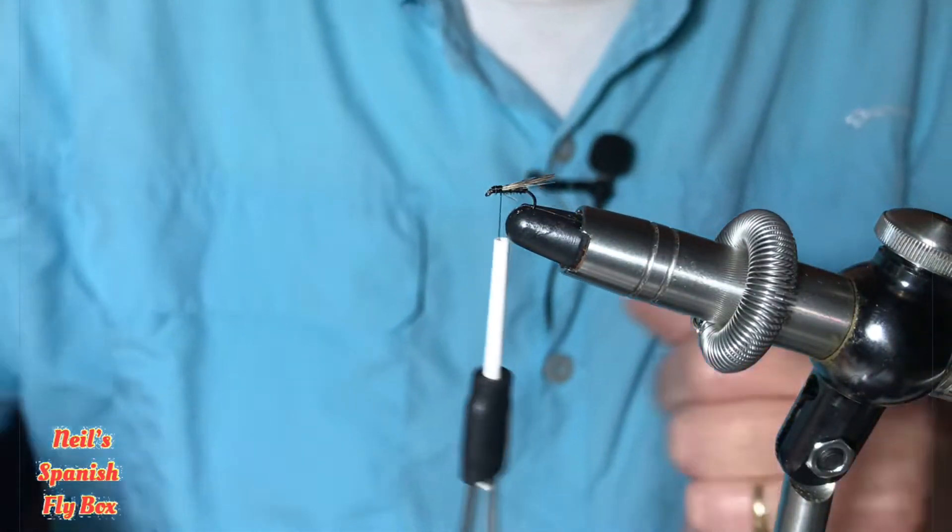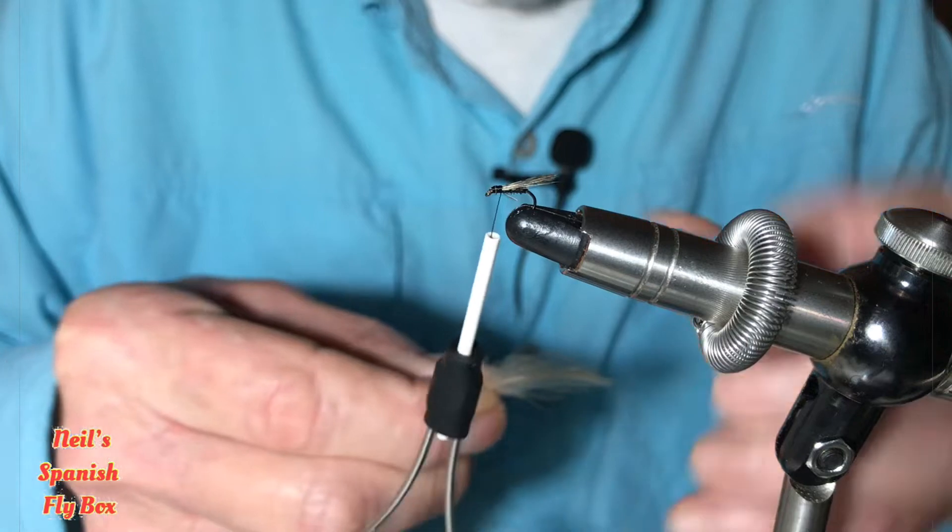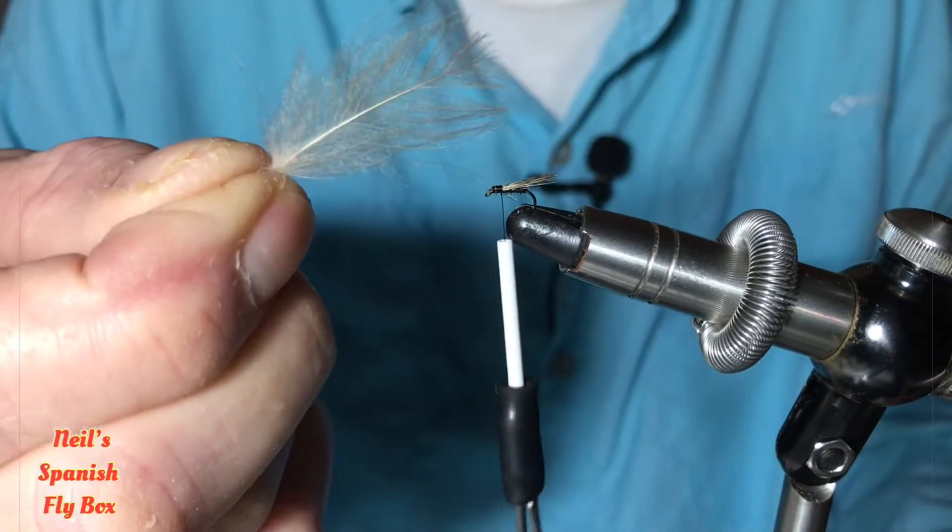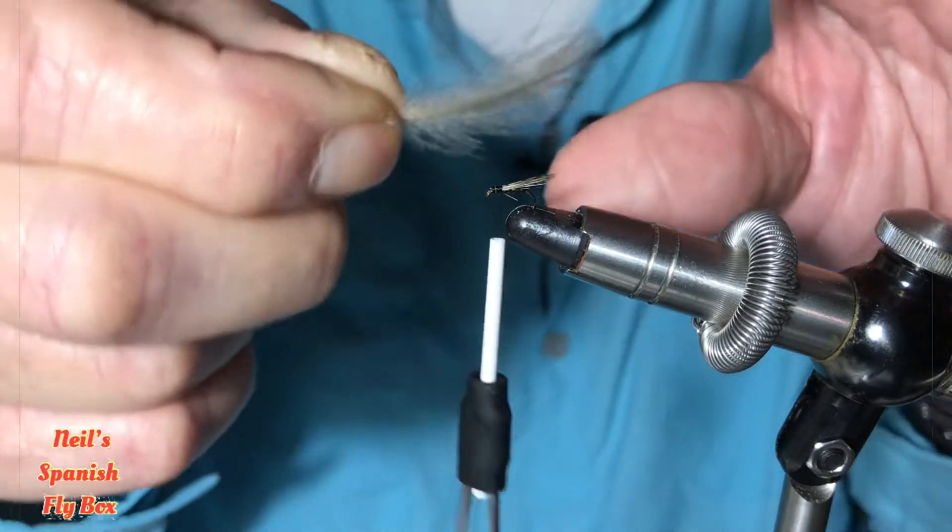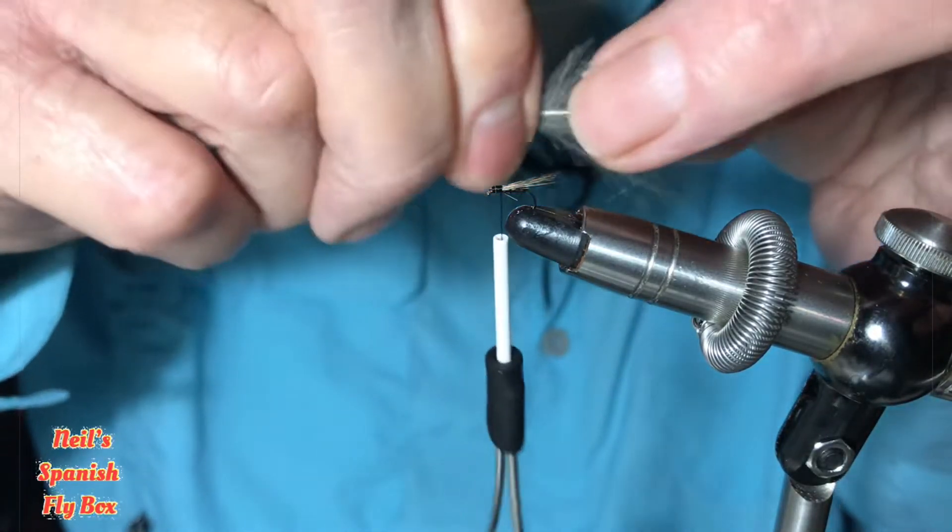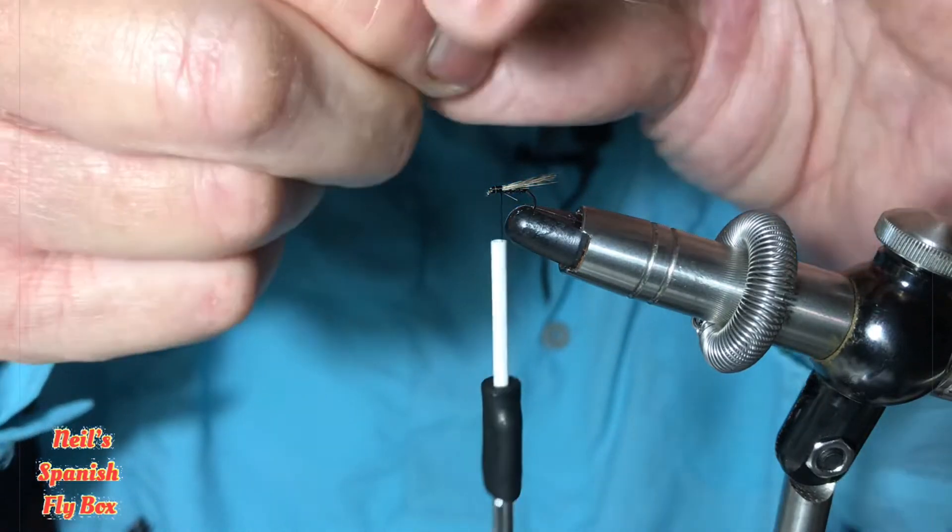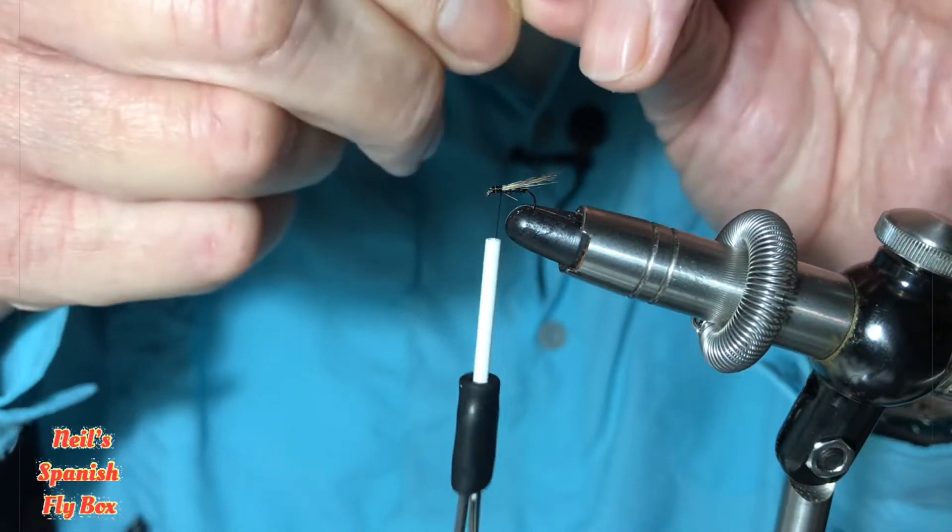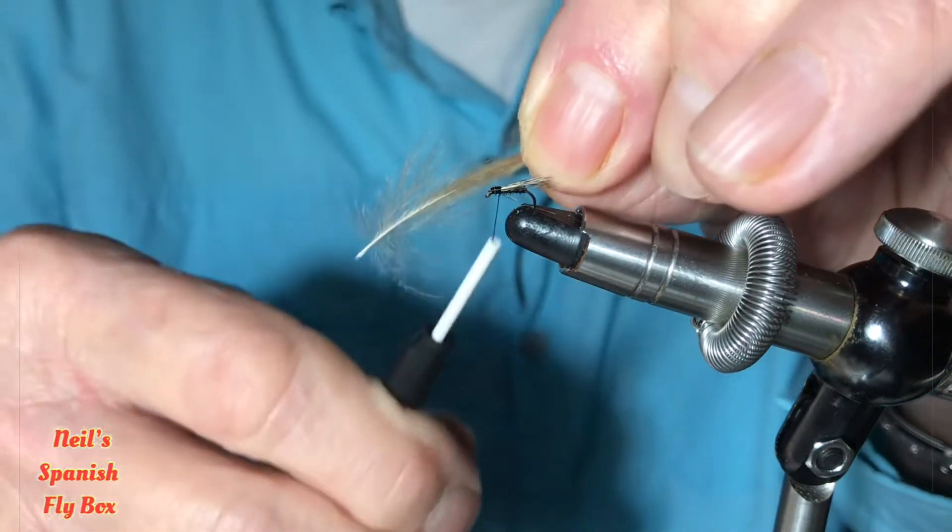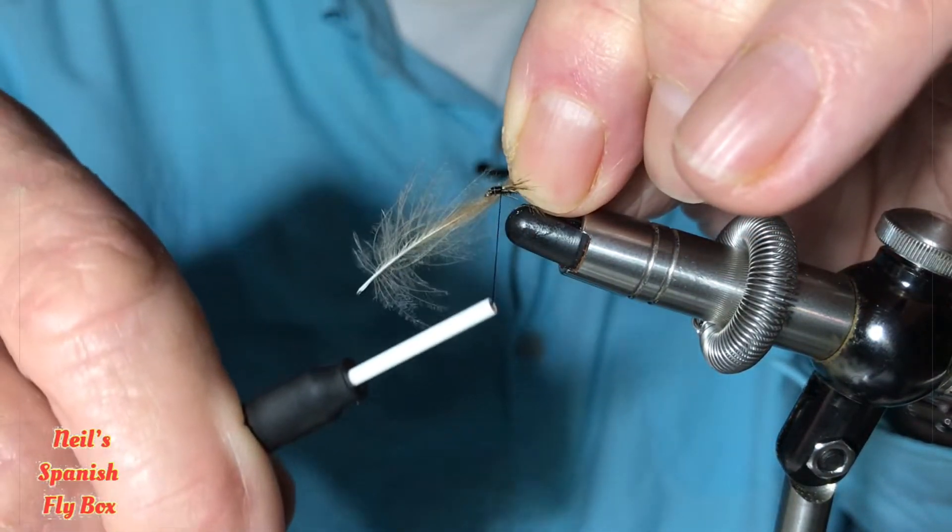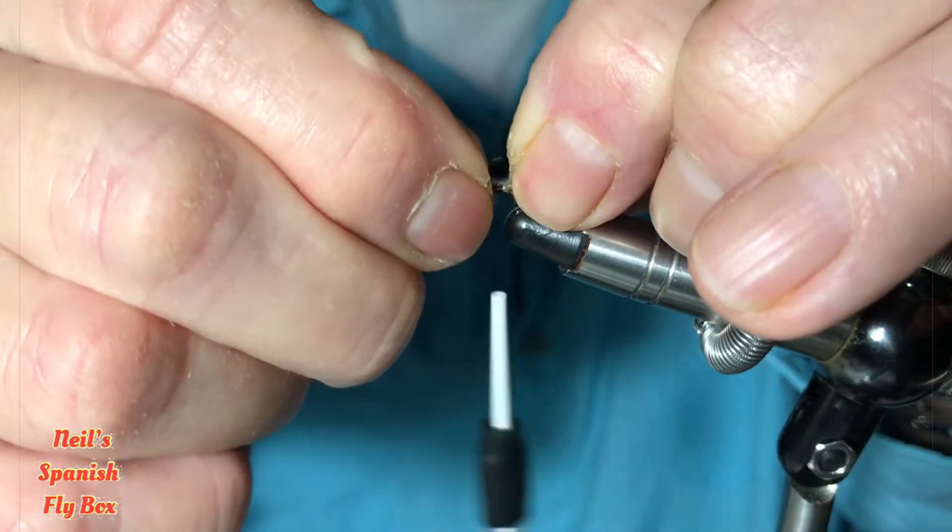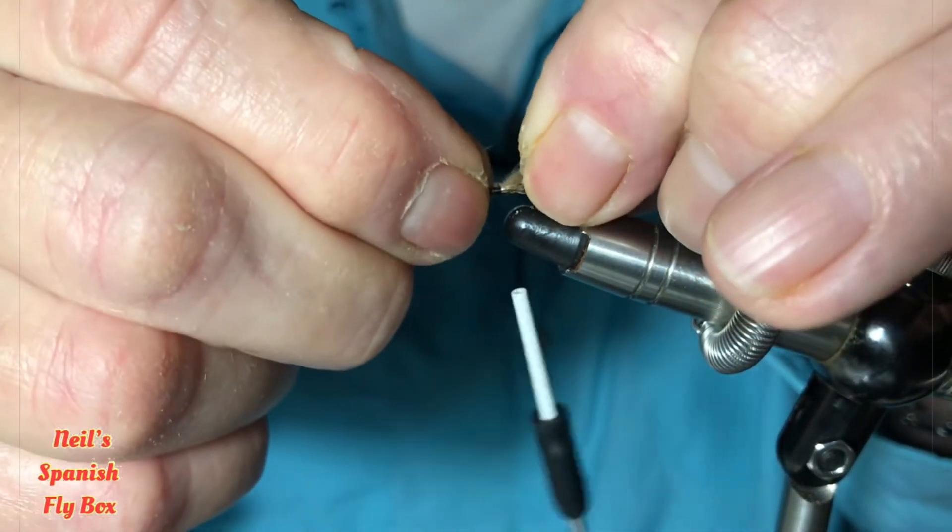Right, now as a sighter, and I suppose to aid the buoyancy as well, I'm going to use a CDC feather. This is a natural brown CDC feather. Just get rid of this rubbish at the bottom. And pull the fibers forward. And tie it in. Right, and pull it to length.